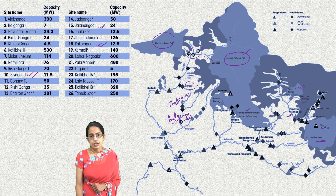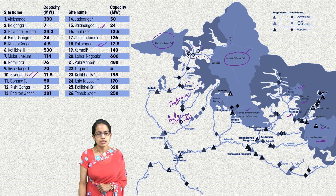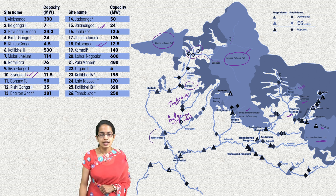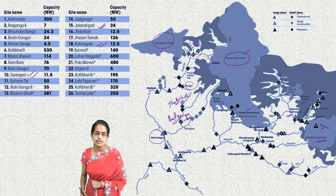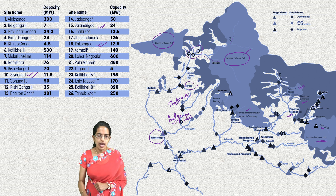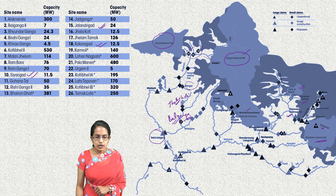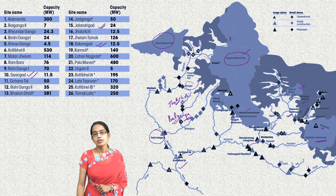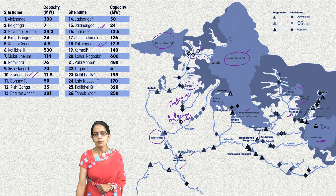Below this, in the downstream region, Tehri is one of the major projects. Then we have the Kothli Bail projects in two phases, part 1 and part 2.